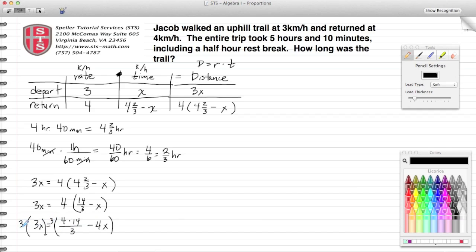3 times 3X gives me 9X, and then 3 times this first fraction - these threes cancel so that's going to leave me with 4 times 14. I'll put that in parentheses to keep that separate from the rest of this problem, minus 3 times the negative 4X gives me a negative 12X.